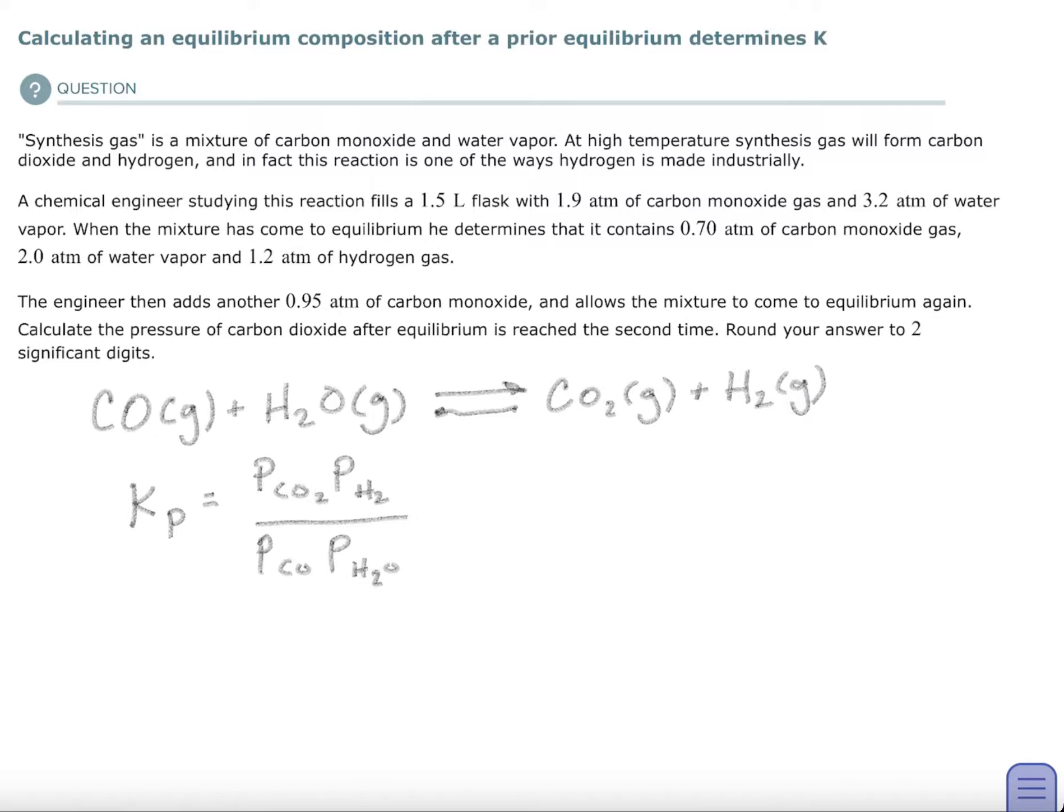So you know that the K sub P, the pressure constant for equilibrium here, is going to be the pressure of your products divided by the products of the pressures of your reactants. So I filled in everything that they gave me. I have the pressure of the hydrogen gas, the pressure of the carbon monoxide, and the water vapor at equilibrium. But what I don't have is the pressure of the carbon dioxide gas at equilibrium. So I'm going to go back and see, is there anything that I'm given?